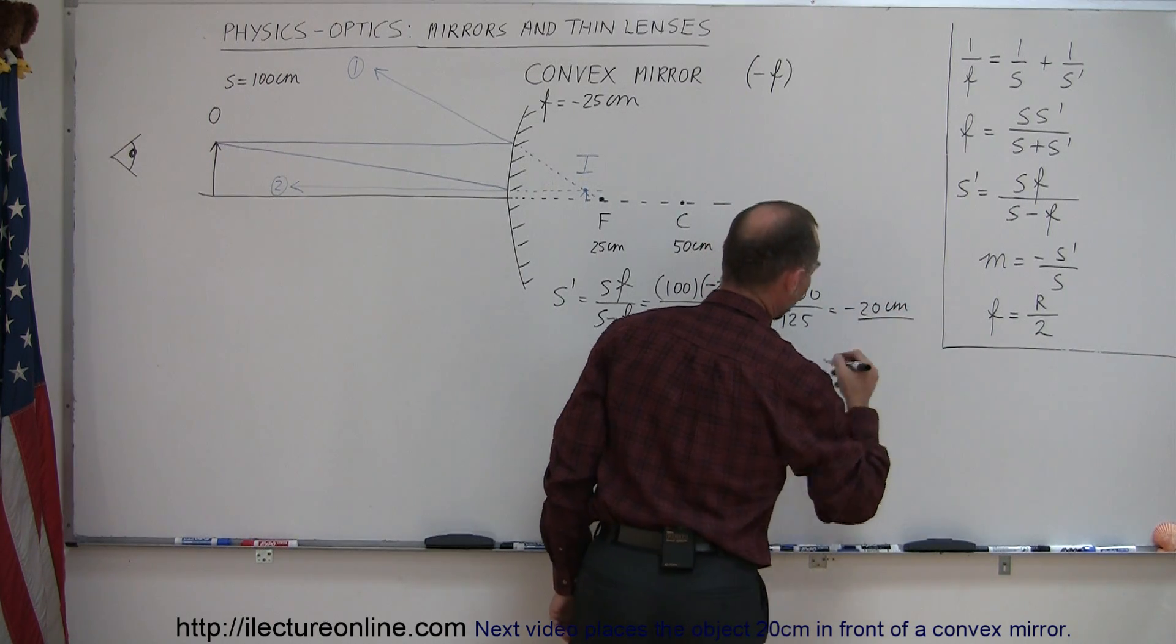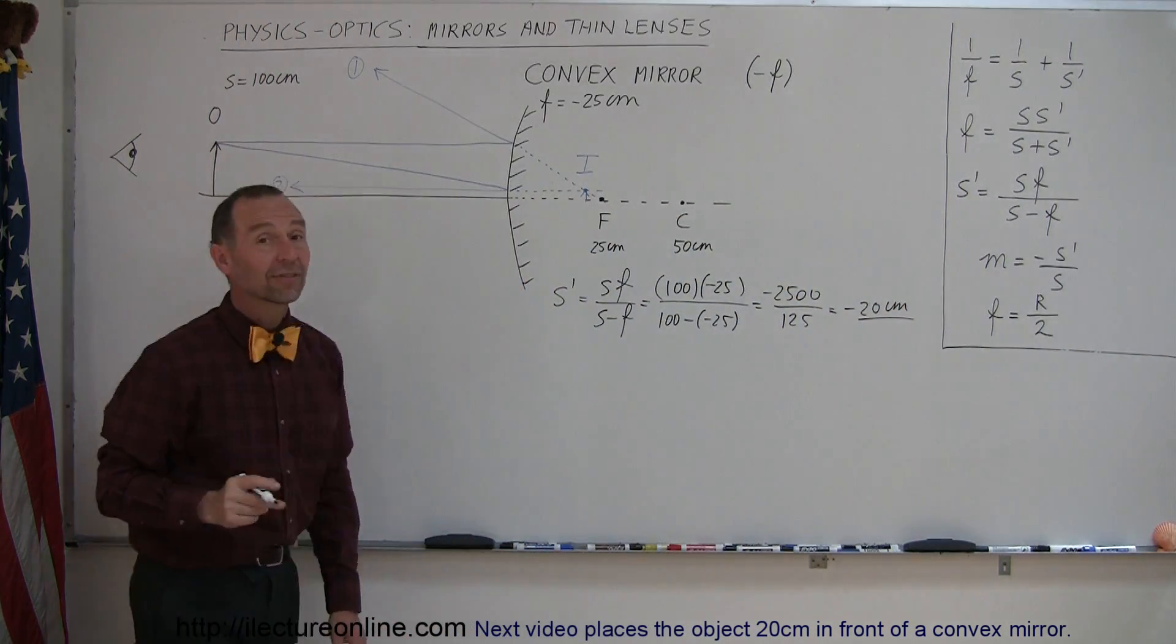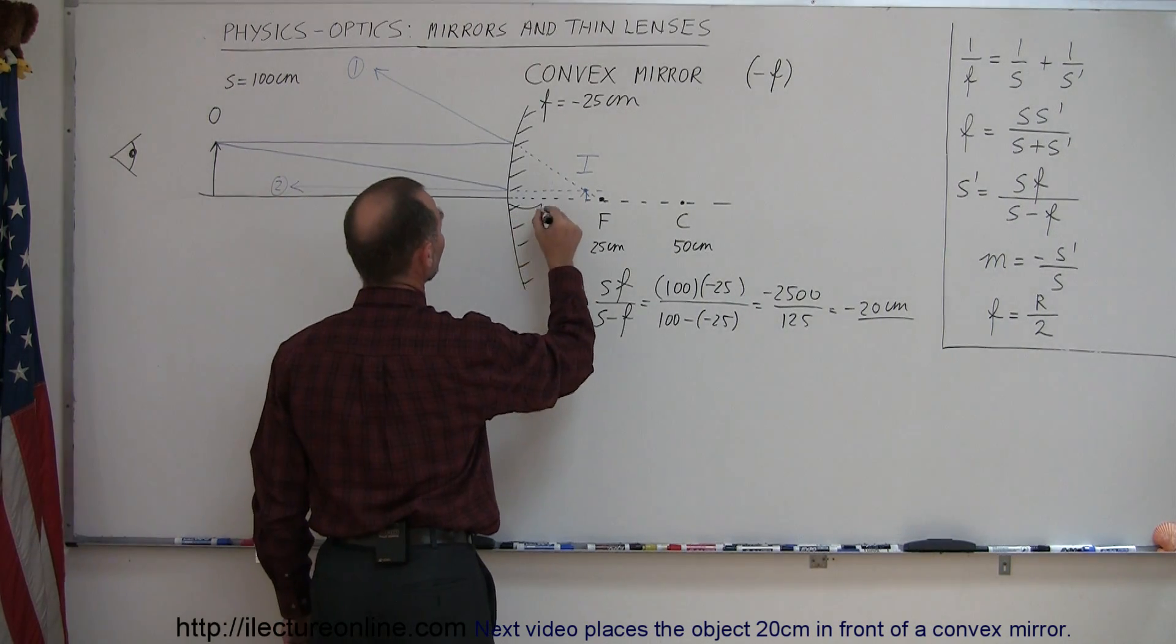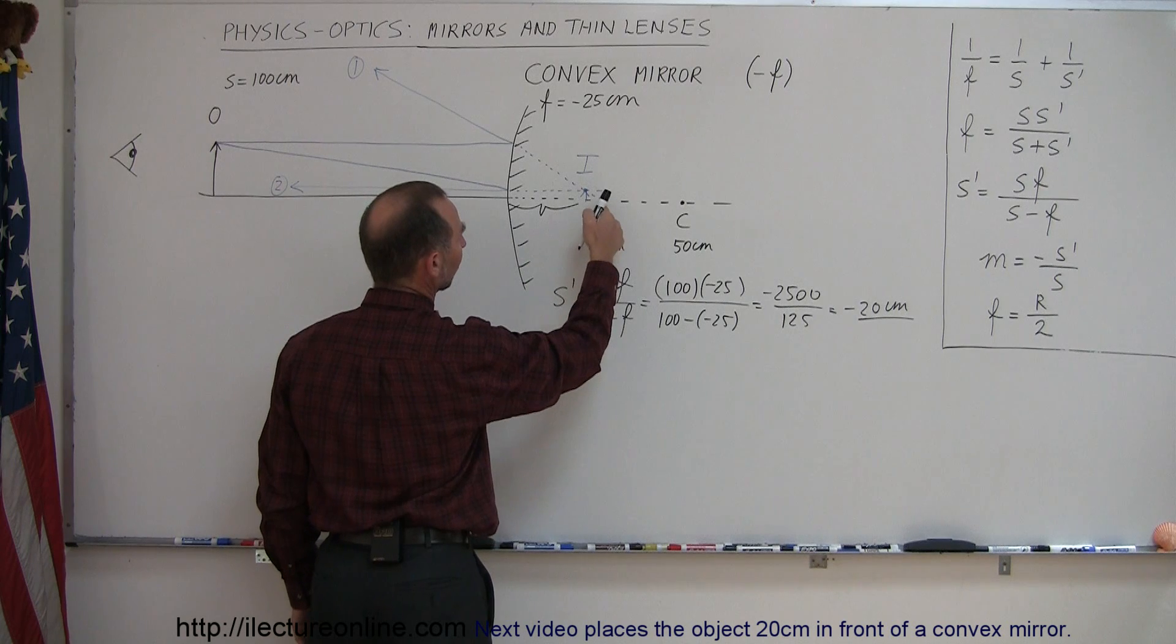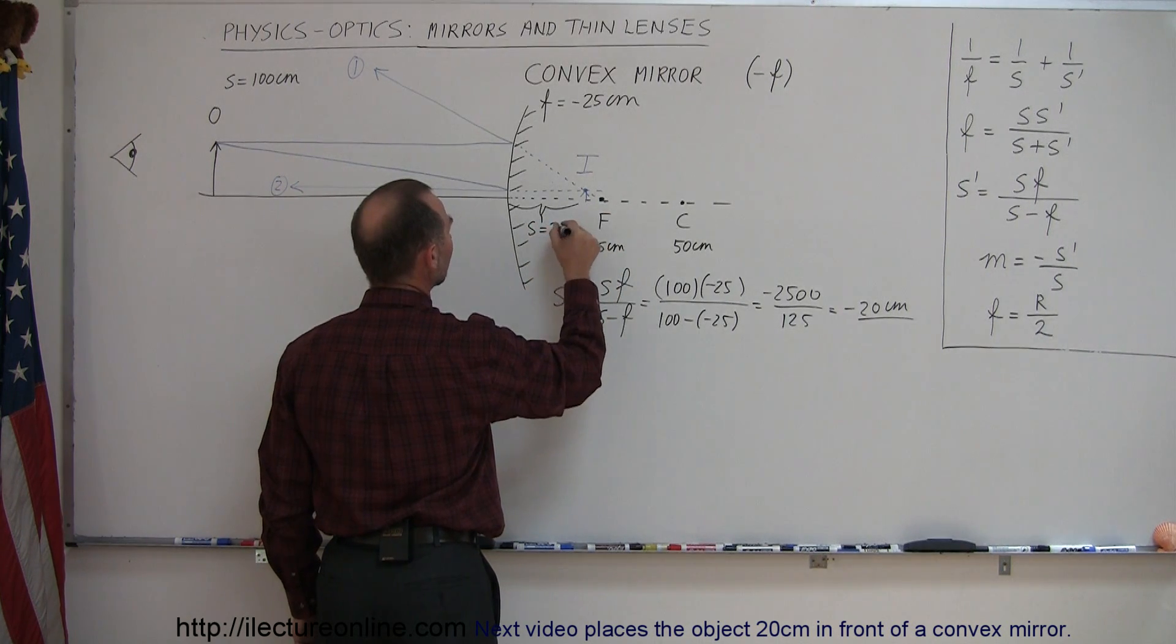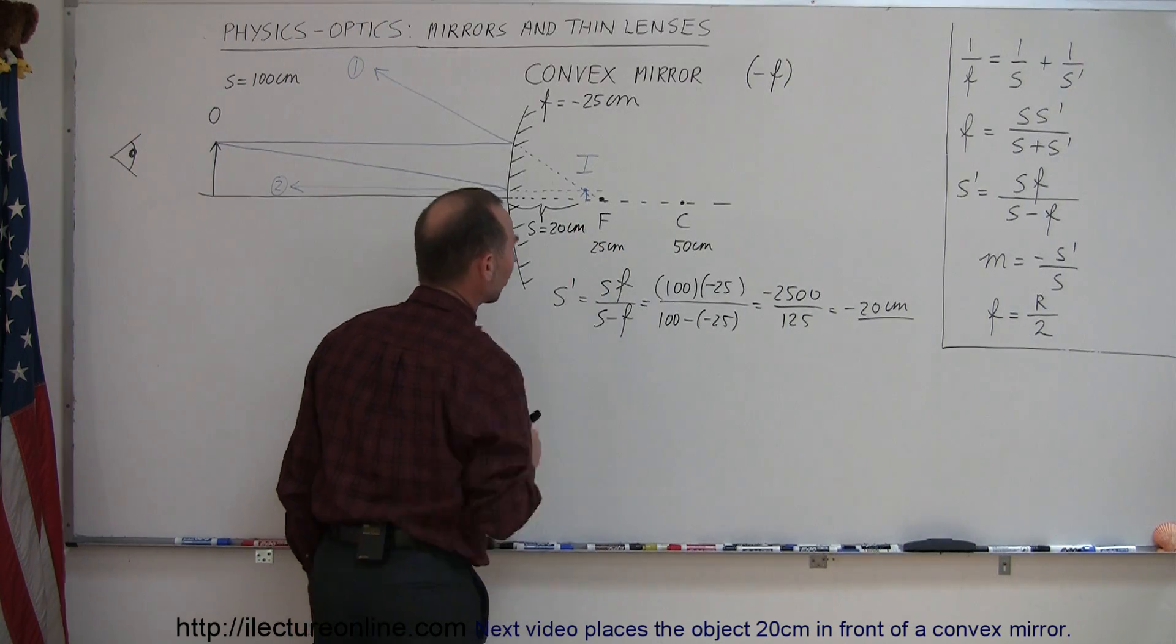And of course that would be centimeters, because all the distances were given in centimeters. That places the image 20 centimeters behind the mirror, and that looks about right, because it's 25 centimeters to the focal point. So S prime equals 20 centimeters. So now we've found the location.